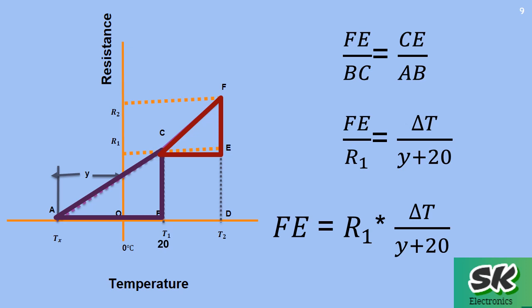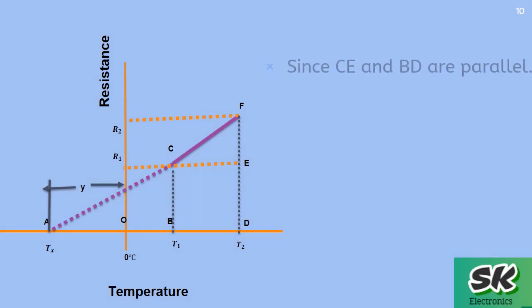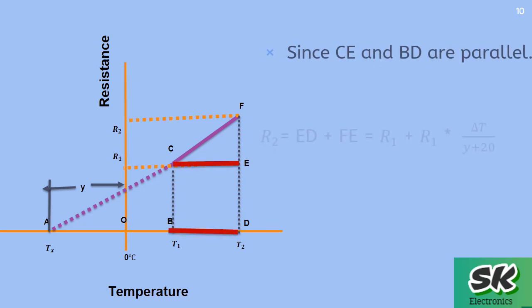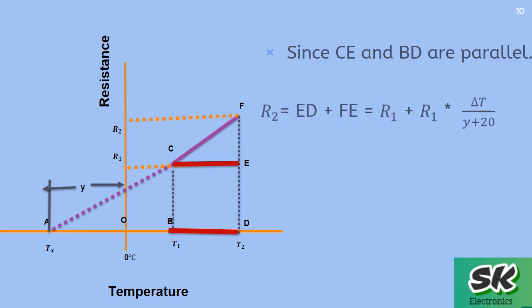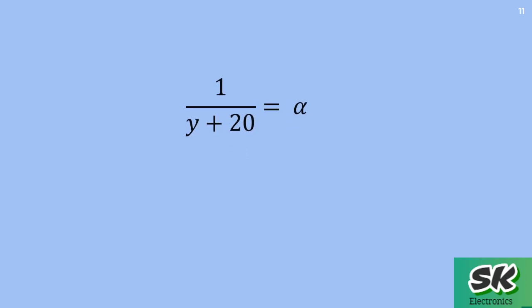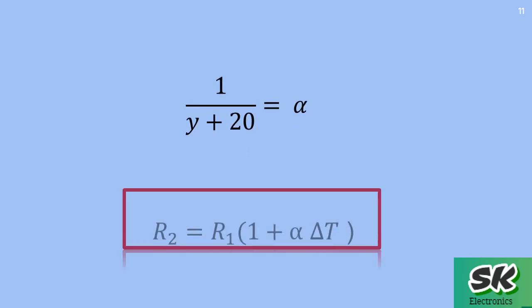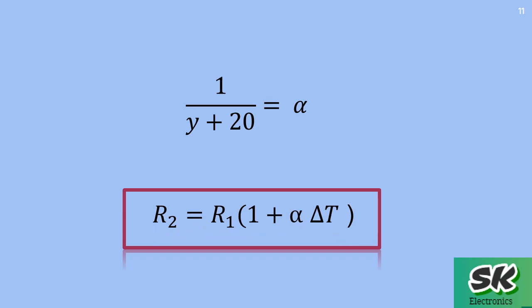We represent this coefficient by the Greek letter alpha. Since CE and BD are parallel, and R2 equals ED plus FE, the value of FE was obtained in the previous slide. By rearranging, and substituting 1 over (Y + 20) equals alpha, we obtain the final expression: R2 equals R1 times (1 + alpha × delta t).